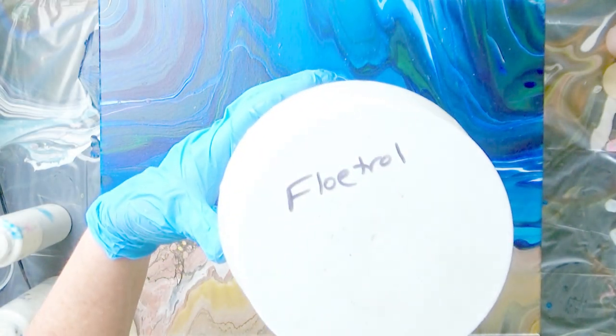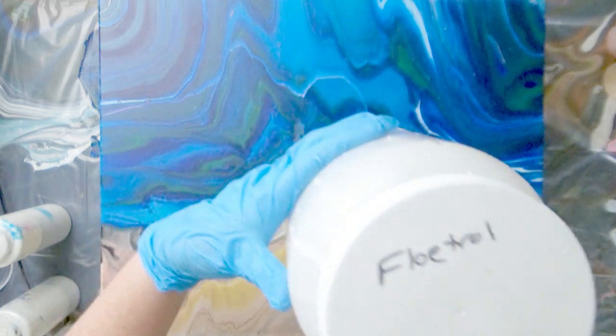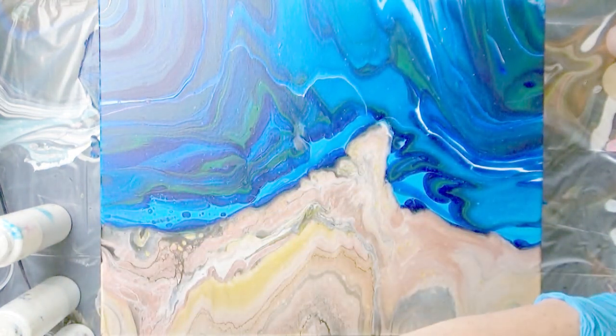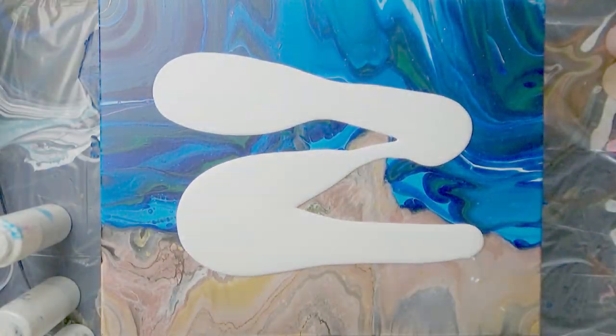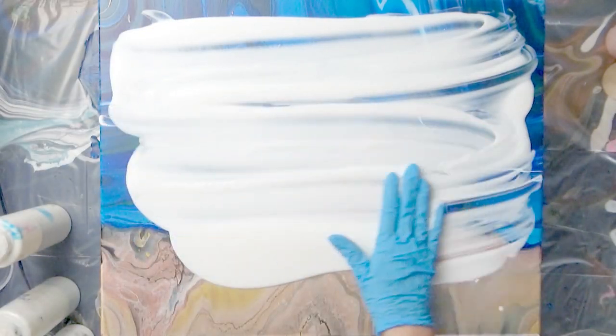So now the canvas is dry and I'm going to cover the entire thing with straight Floatrol. I know it sounds odd but wait until you see what we can do with this. Not only will the Floatrol give a good sheen after it's dried but while it's wet we can use it to create some lacing.